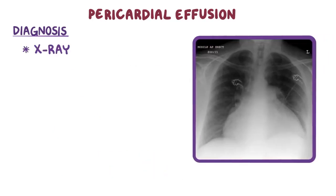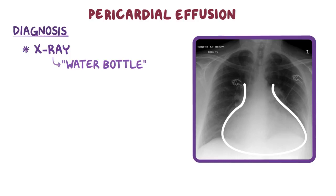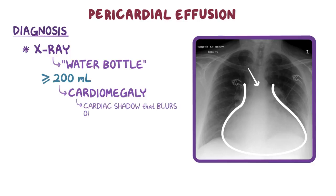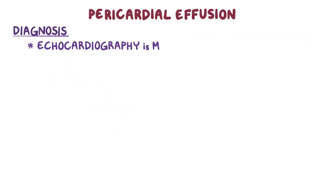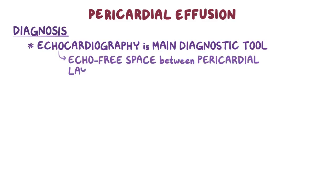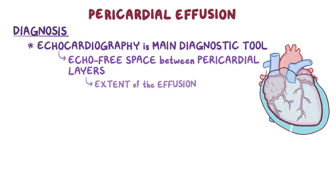On an x-ray of a heart with a large pericardial effusion, you can see a silhouette that pools to the bottom of the heart and gives a classic water bottle sign. A large pericardial effusion of at least 200 milliliters causes cardiomegaly — a large cardiac shadow that blurs out the distinction between the arch of the aorta and the left ventricle. Echocardiography is the main diagnostic tool used in the evaluation of pericardial effusion, showing the excess fluid creating an echo-free space between the two pericardial layers, and gives a clear picture of the extent of the effusion, which is directly proportional to the separation between the layers.